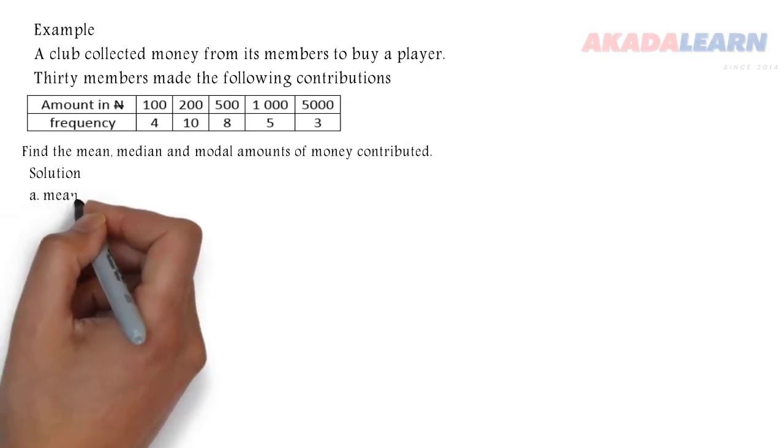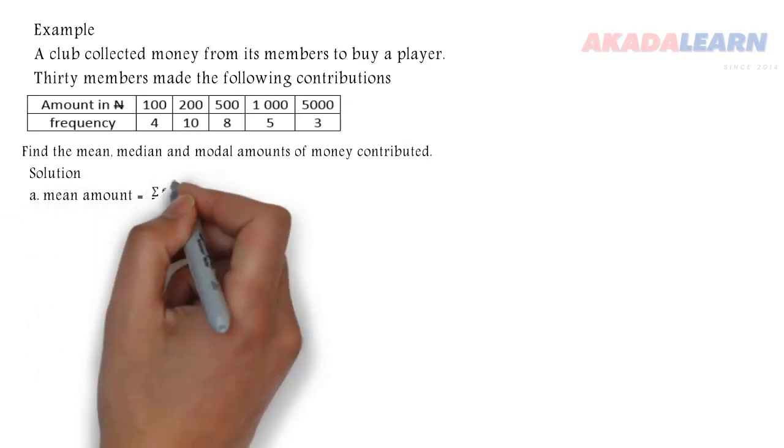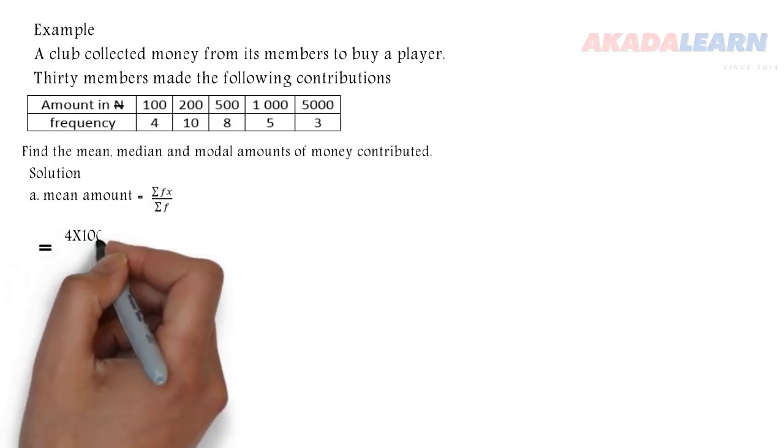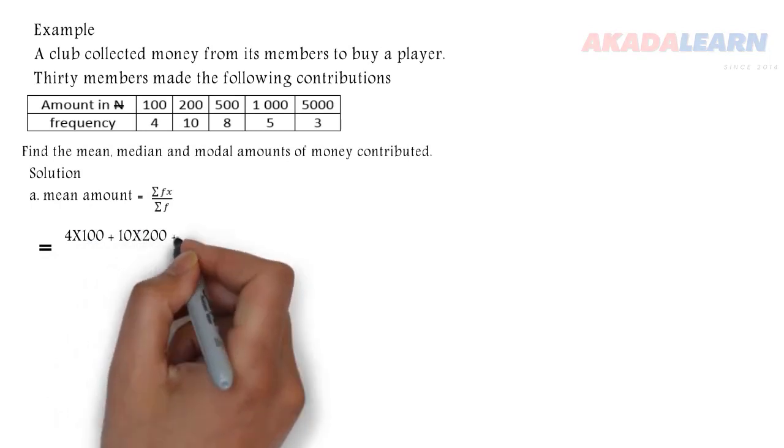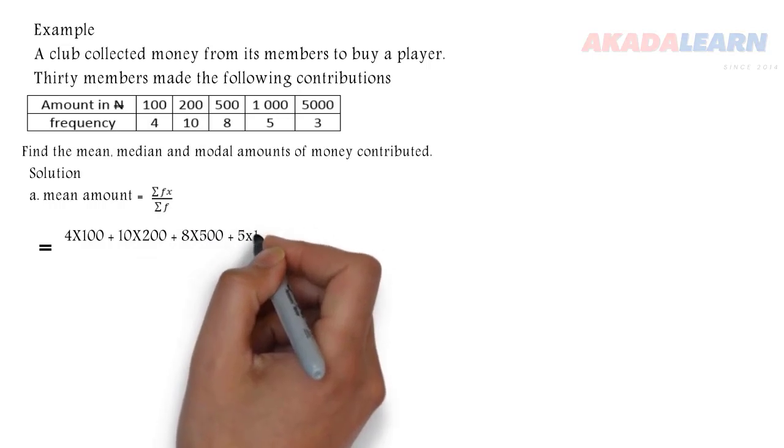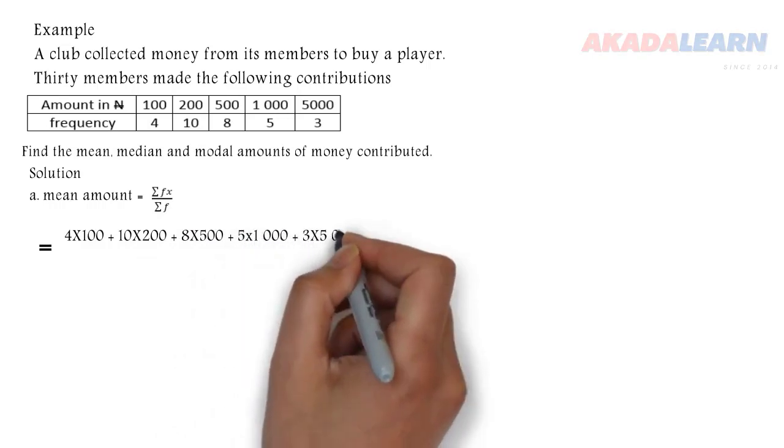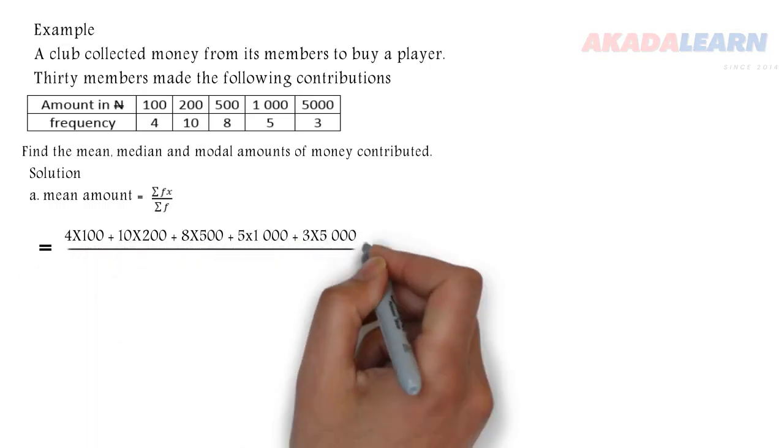So first, starting with the mean. The mean amount is given as summation of fx over summation of f. Summation means sum, which is plus. So first we are going to be multiplying each of those numbers with the frequency. So we have 4 times 100 plus 10 times 200 plus 8 times 500 plus 5 times 1000 plus 3 times 5000. Then we divide by summation of the frequency.